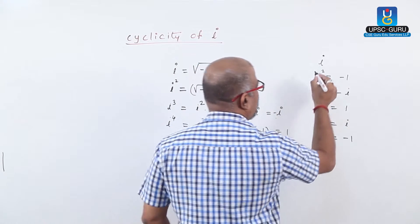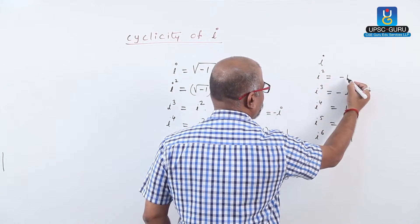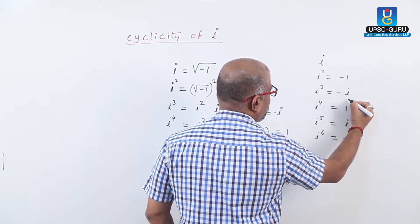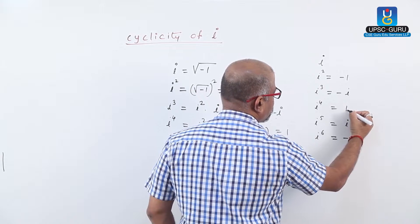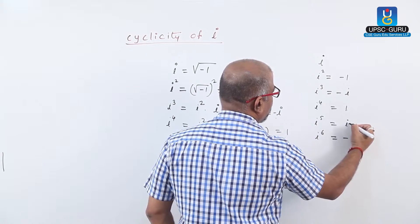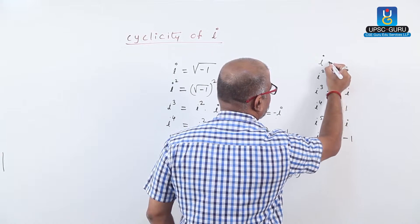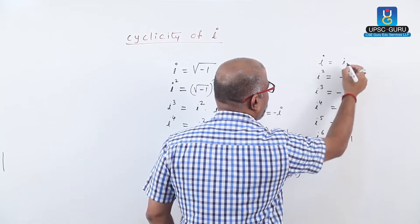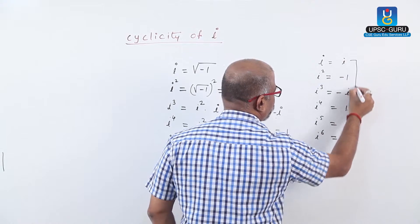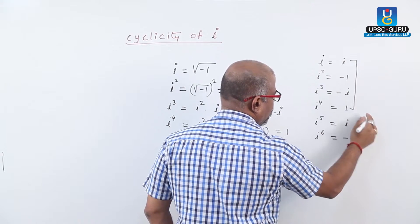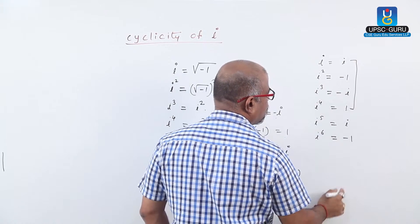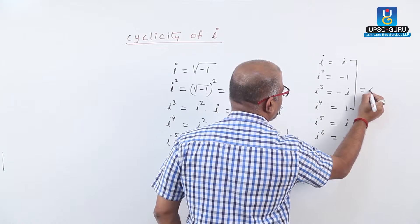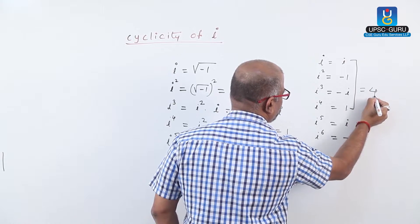Here we observe that the values cycle as: i, then minus 1, then minus i, then plus 1, then i again. That means after every 4 values the cycle starts again. Therefore cyclicity of i equals to 4.